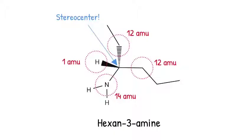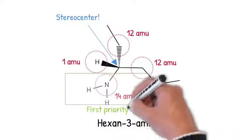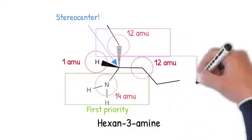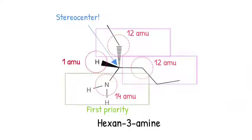In the case of this molecule, the amine group is the highest priority because nitrogen has the highest atomic mass. Carbon is the second highest atomic mass, but two substituents are bound to the stereocenter by carbon. So we must differentiate between the two in order to decide which has a higher priority.